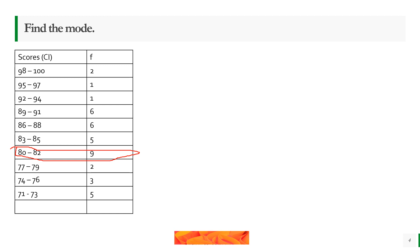To get the mode, the modal class is between 80 to 82. Our lower boundary is equal to 79.5. We get this by taking 80 minus 0.5, which equals 79.5.